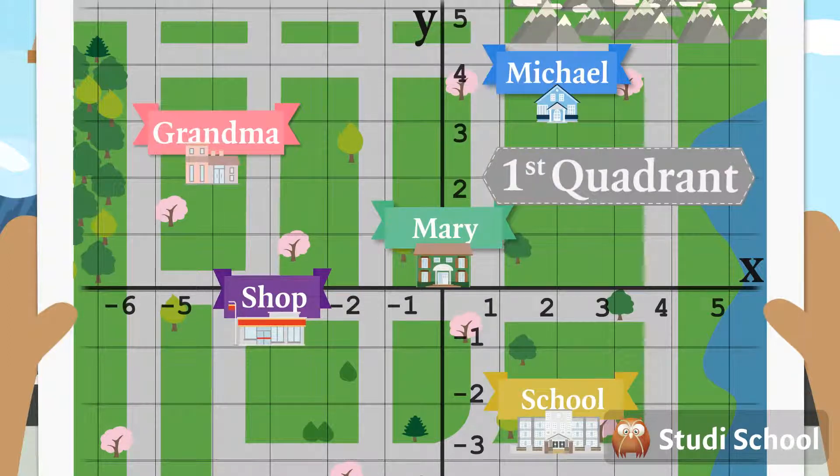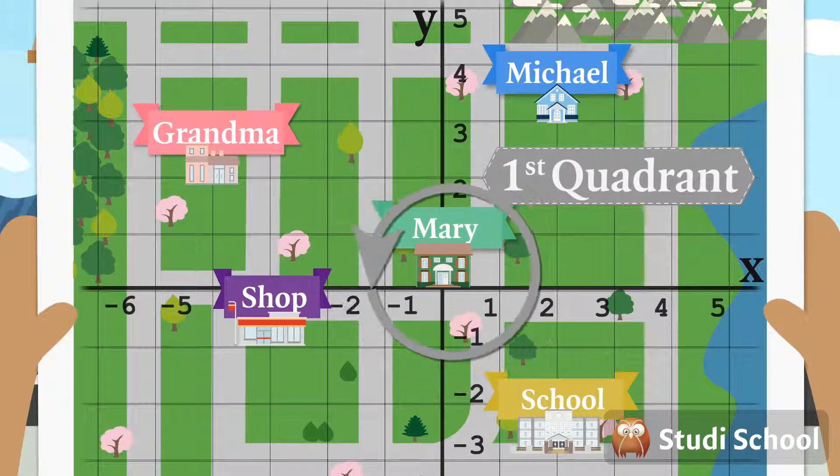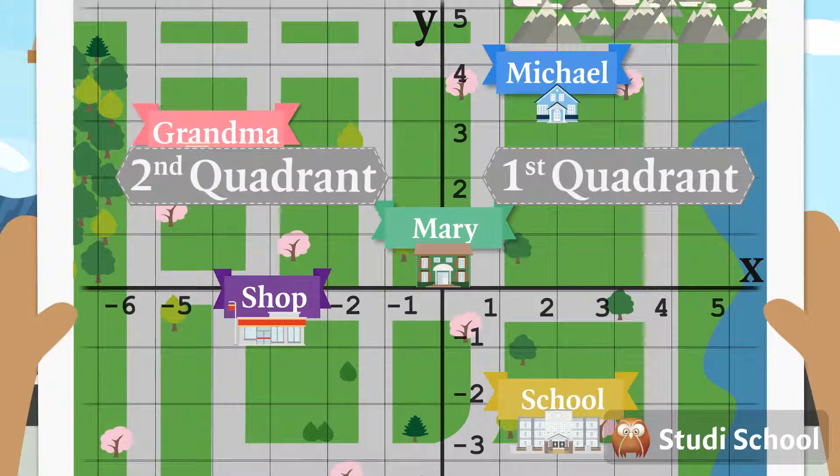Michael lives in the first quadrant. Then we move counterclockwise. Granny lives in the second quadrant. The shop is in the third quadrant.